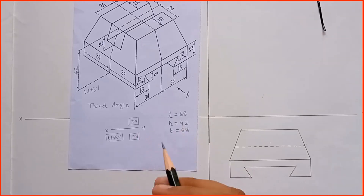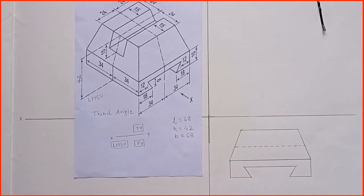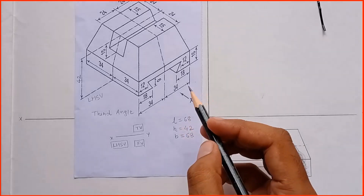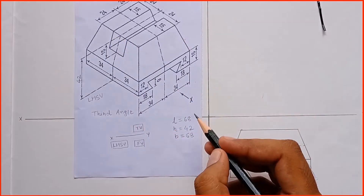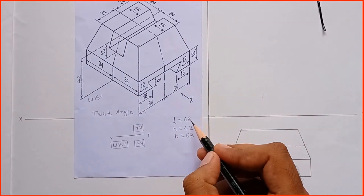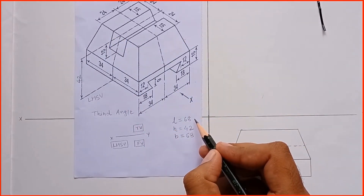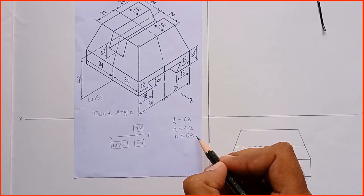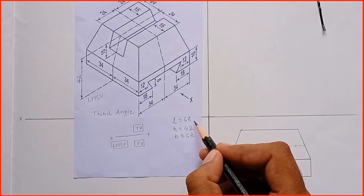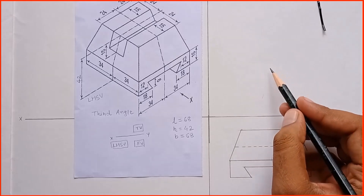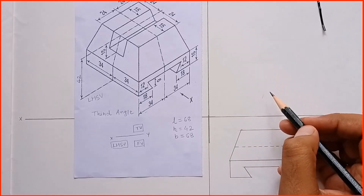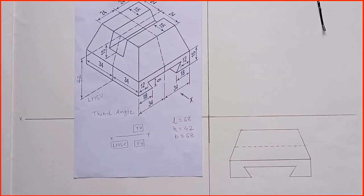In a top view, which two dimensions are visible? Length and breadth — these two dimensions are visible. So if we make a light rectangle of 68 by 68, then in that particular rectangle we can draw our top view. Let's start drawing the first light rectangle.